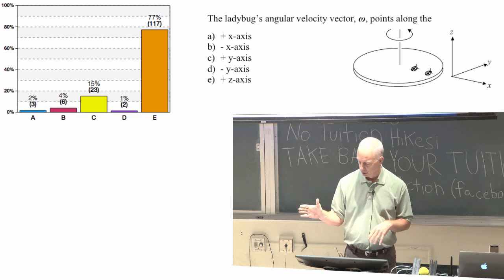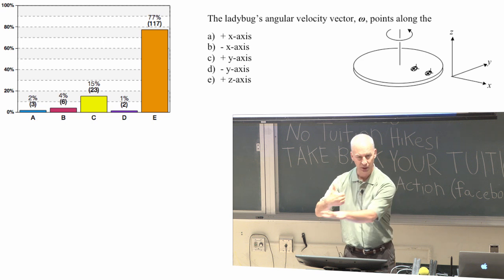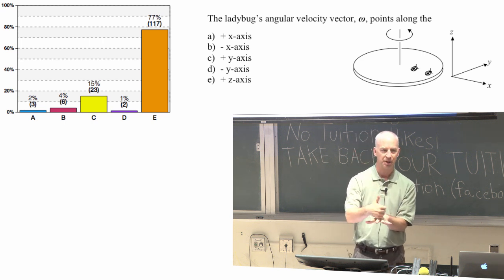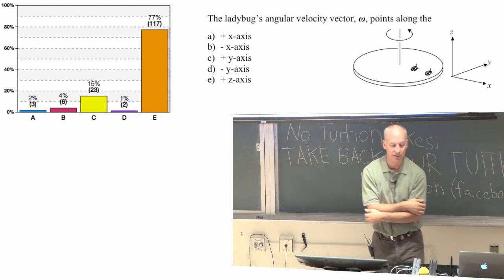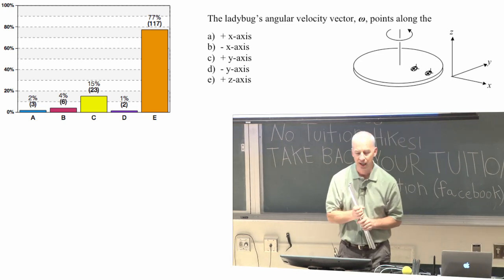If you curl your hand around the direction that the motion is, assuming that's a horizontal platter, then your right hand rule tells you, your thumb tells you that the direction is in the positive z direction. The direction of the angular velocity is in the positive z direction.